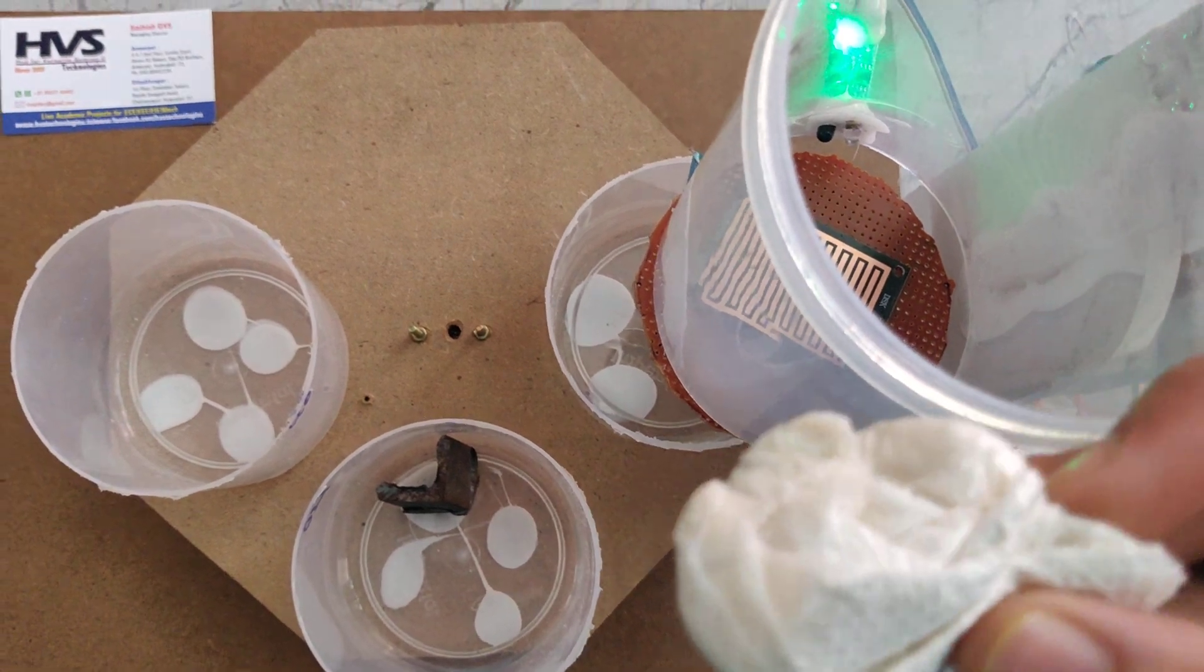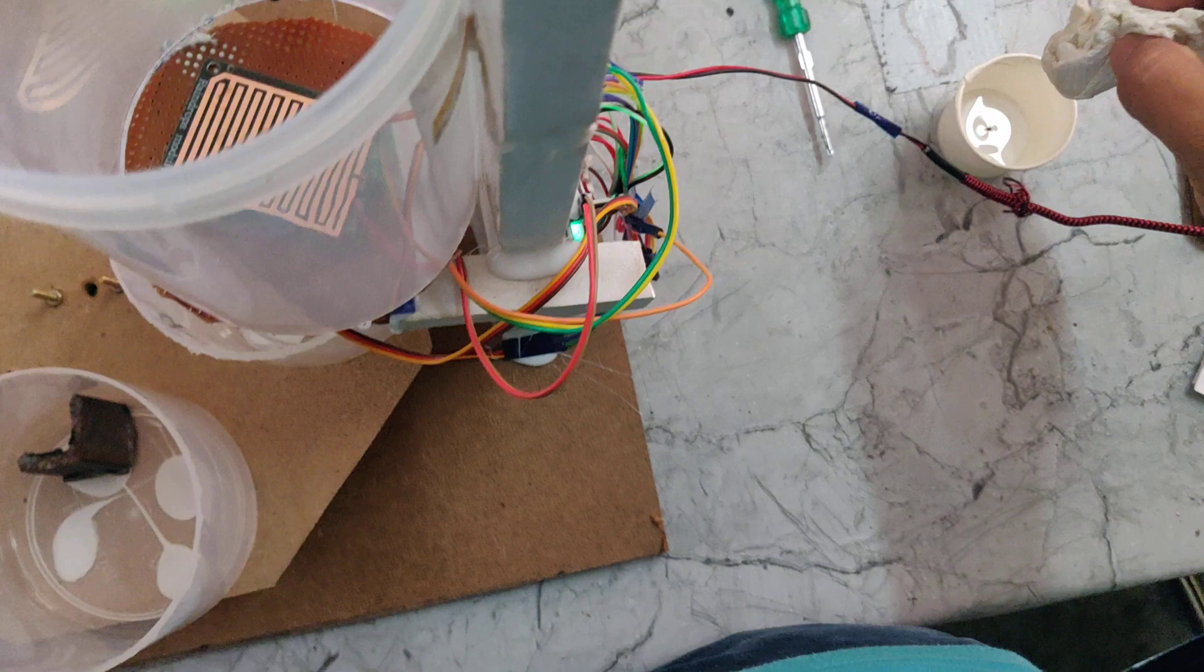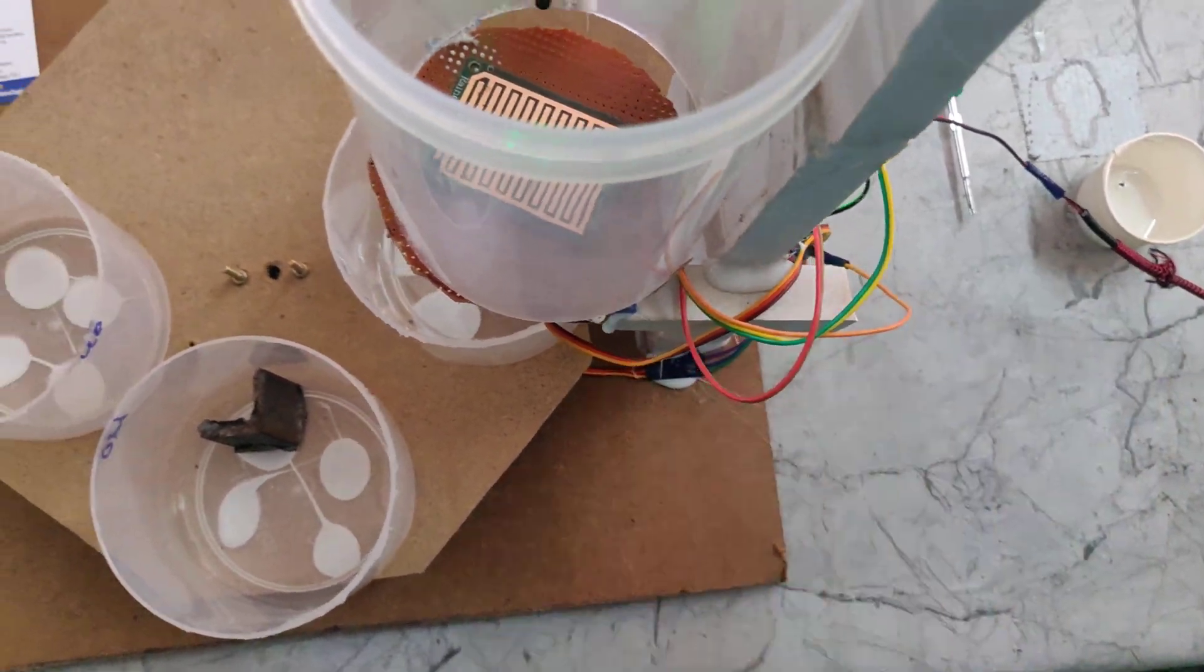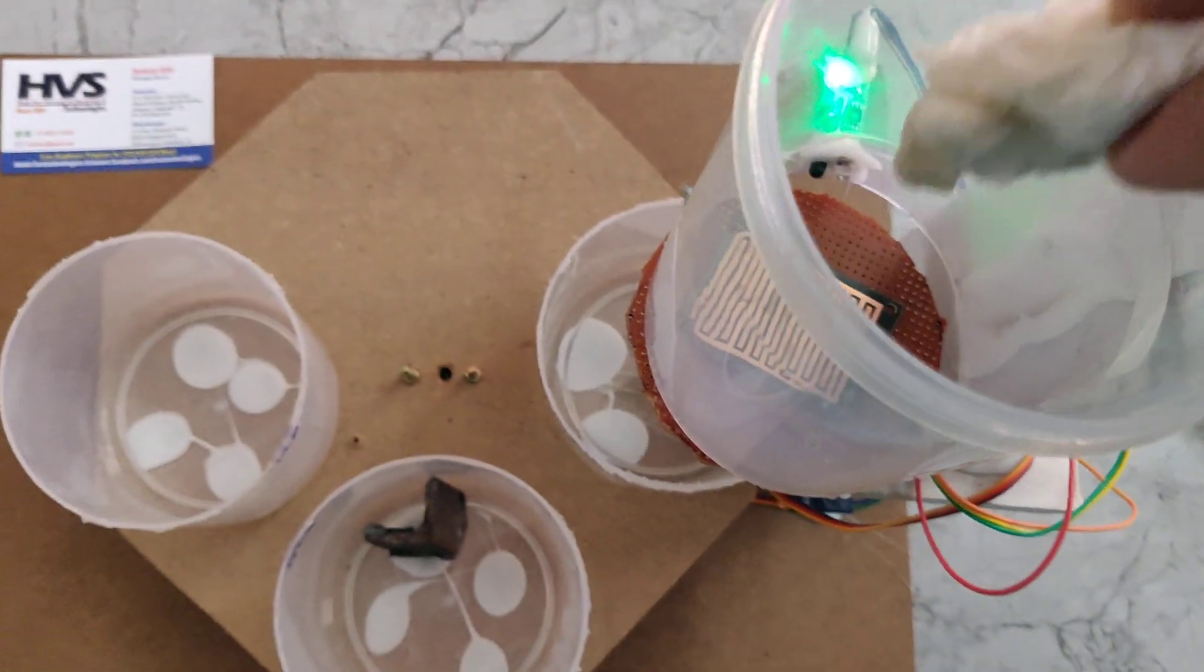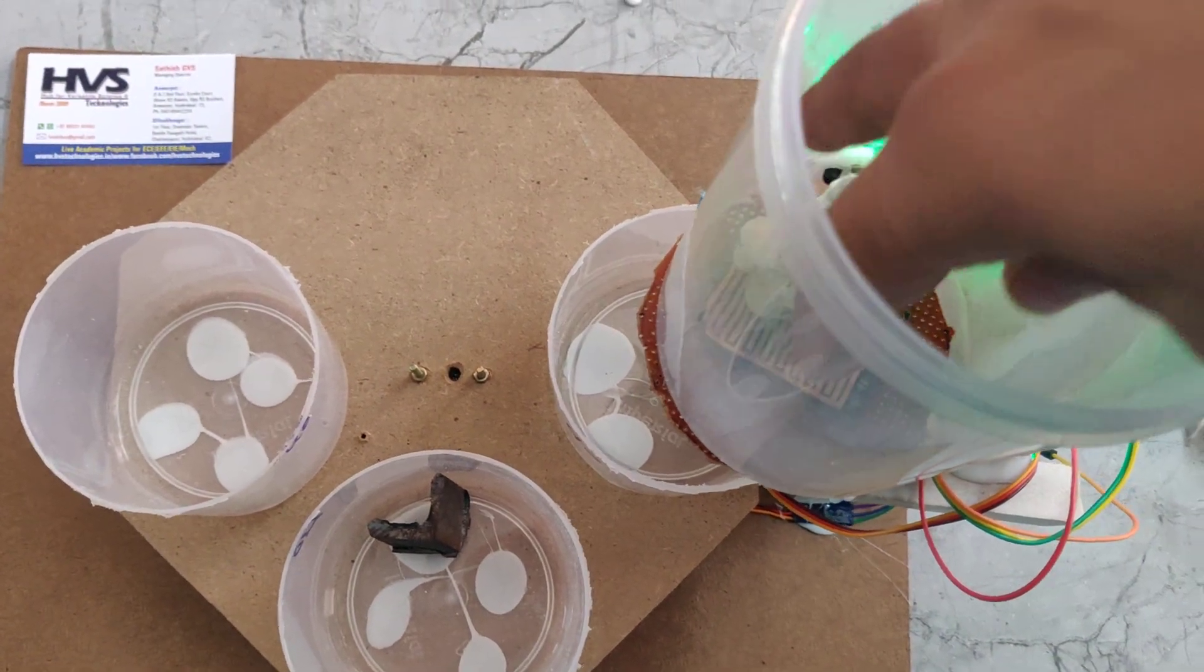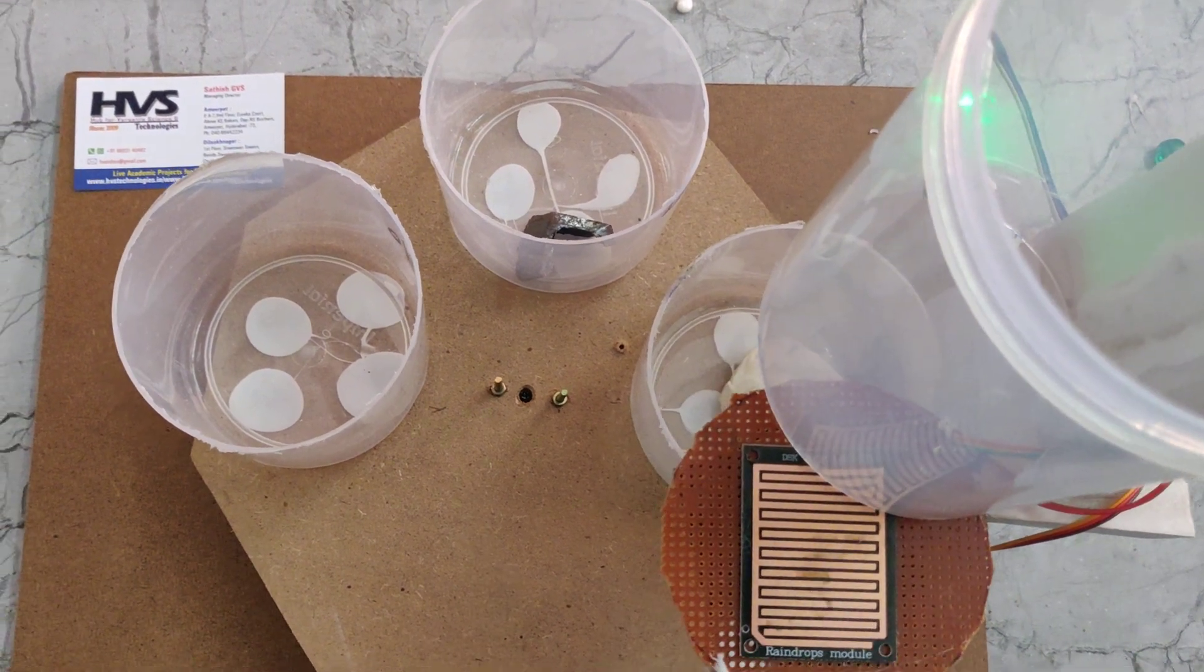For wet waste I am using the tissue paper. So I am using two. This is a wet waste. So I am putting it here. This is the wet waste box.